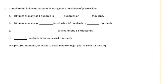Number 2. Complete the following statements using your knowledge of place value. 10 times as many as 100 is how many hundreds or how many thousands. So 10 times as many as 100 — that would be 10 times 1. 10 times as many as 100 is 10 hundreds. And 10 hundreds in our place value chart would be 1,000. 10 times as many as 100 is 60 hundreds.